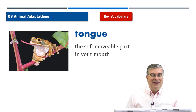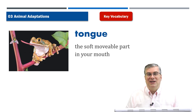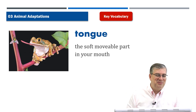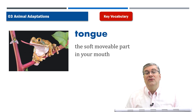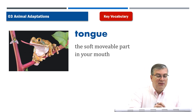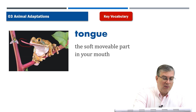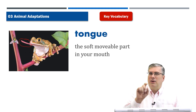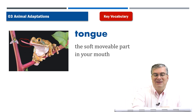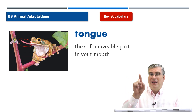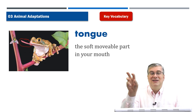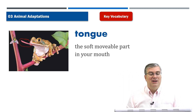Tongue. Tongue, of course, is the soft, movable part in your mouth. I would show you mine, but it seems a little rude to stick your tongue out at another person, so don't do that. We can see a picture of a frog. A frog has a very famous and interesting tongue. The frog can flick its tongue out — throw its tongue out at an insect far away — and catch it because the tongue is sticky. So the frog uses its tongue to catch its food: insects.